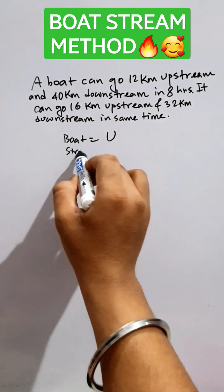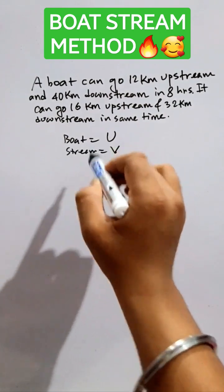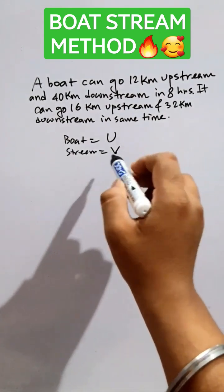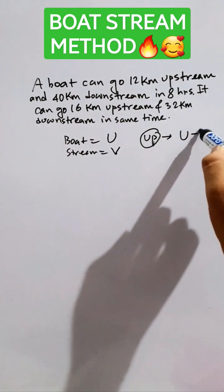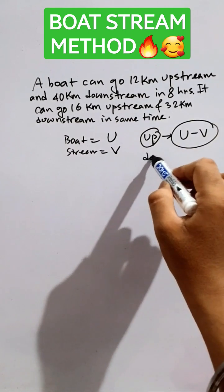And the speed of the stream as v kilometers per hour in both cases. Now just remember that in case of upstream, the speed will be u minus v. And in case of downstream, the speed will be u plus v.